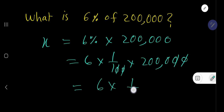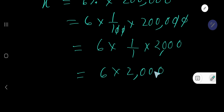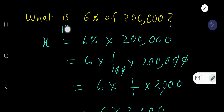So we are getting 6 times 1 over 1 times 2000. Now you need to multiply 6 times 2000 — it is easy: 6 times 2 is 12, then write the number of zeros, so we are getting 12,000. So 12,000 is 6% of 200,000.